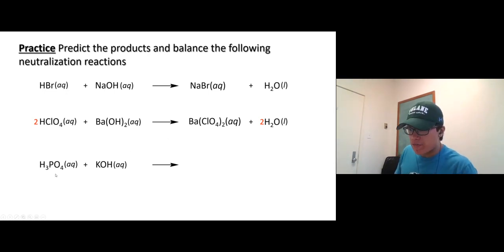Last one, phosphoric acid and potassium hydroxide. Swap the partner, potassium phosphate and you're gonna get water. Always, this is neutralization reaction. Add an acid and a base, you're gonna get salt and water. Potassium phosphate, check the charge. Plus one, minus three, cross it over. K3PO4. Three potassium, I'm gonna put three in front of potassium hydroxide.